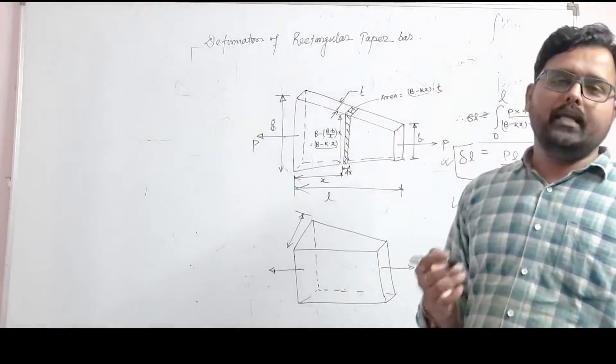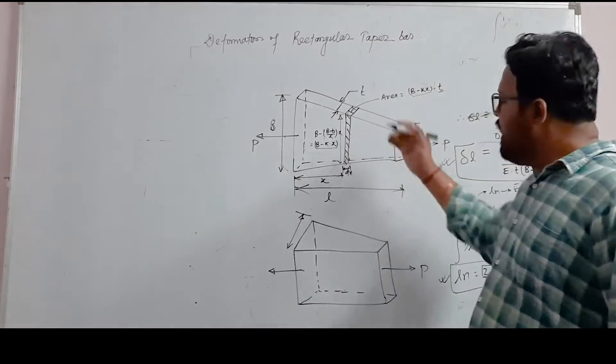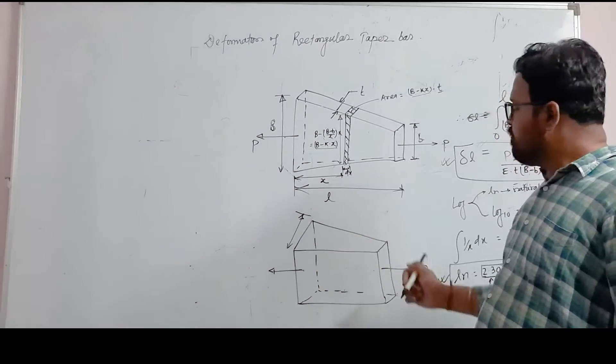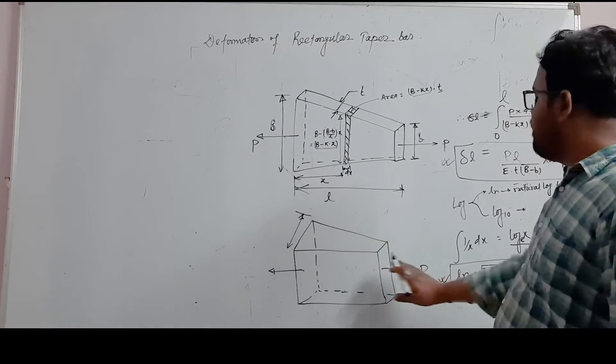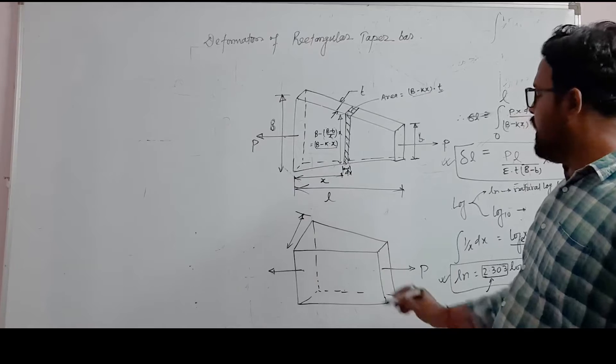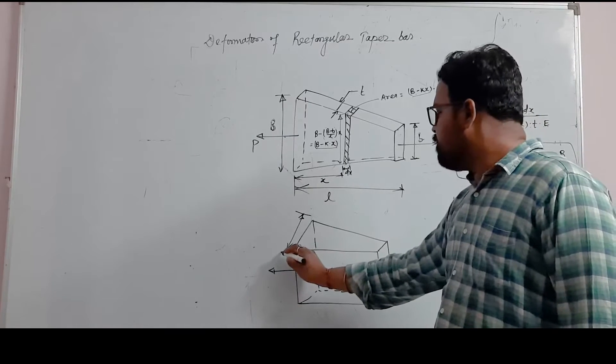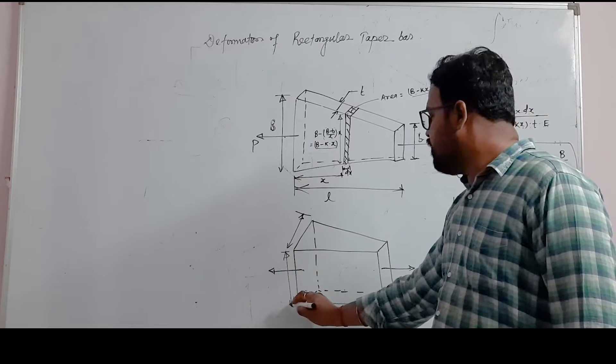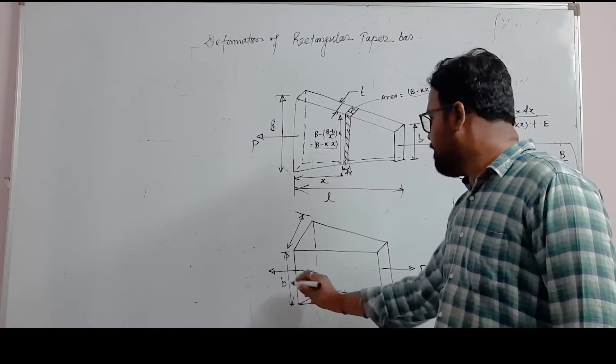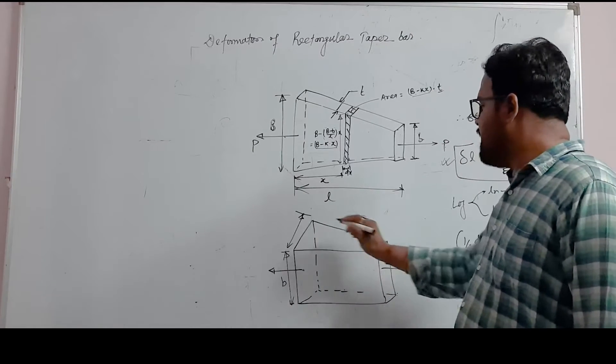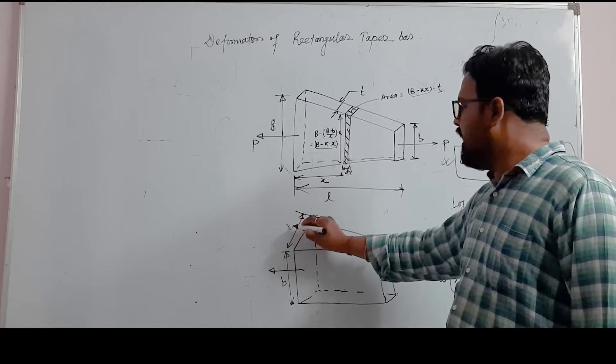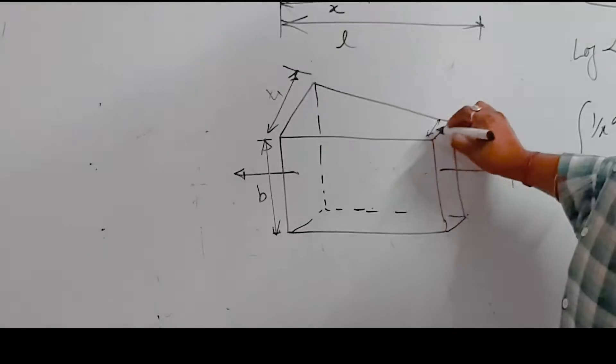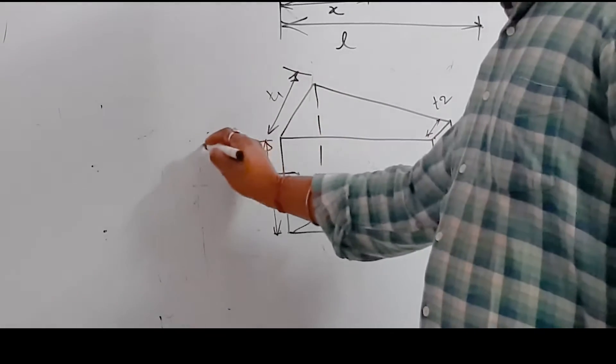I will leave this as self-practice for you to find the deformation. In this case, the width is the same throughout, but the thickness tapers - here thickness is T1 at one end and T2 at the other end.